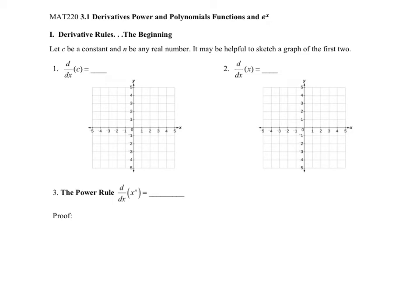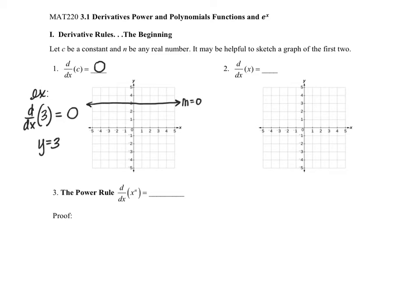Let's first take a look at the derivative of a constant. If c is a constant, let's analyze this graphically. If we were trying to determine the derivative of the constant 3, graphically we know that would represent the line y equals 3, which is just a horizontal line. Therefore the derivative of this function is the slope of this curve at any point, and this curve has a slope of zero everywhere. Therefore the derivative of the constant 3 will just be zero.